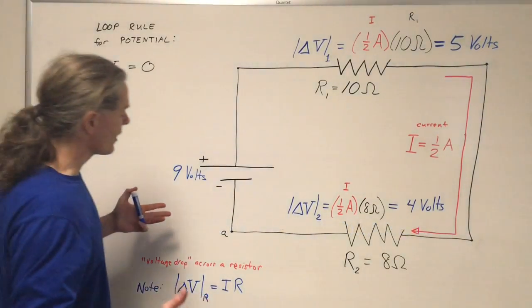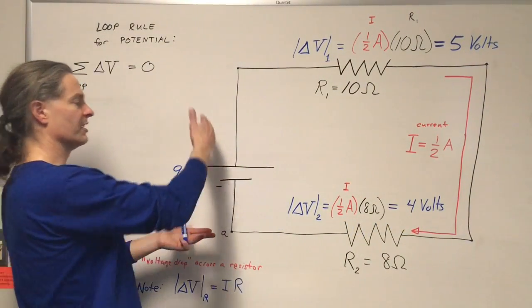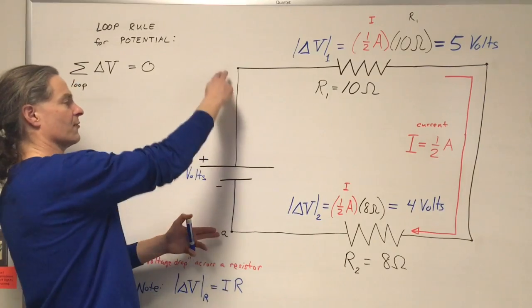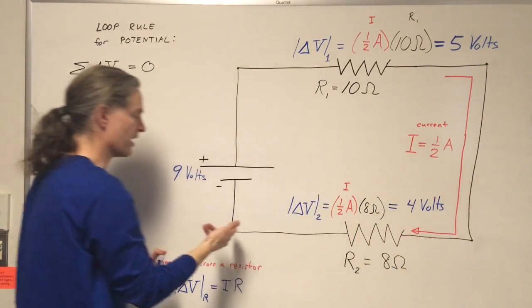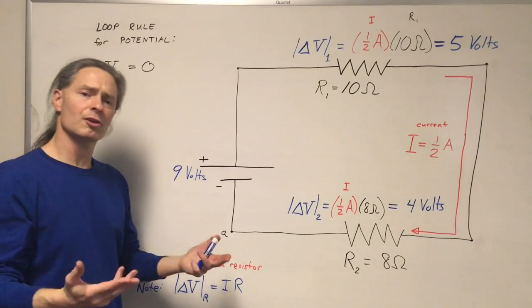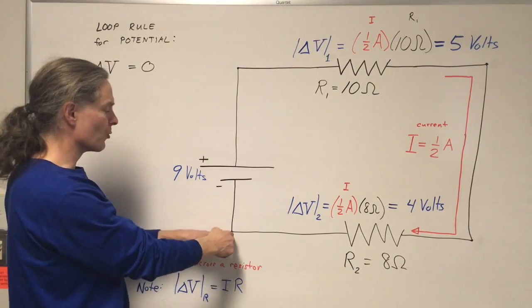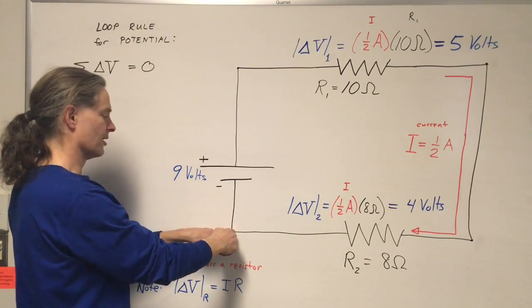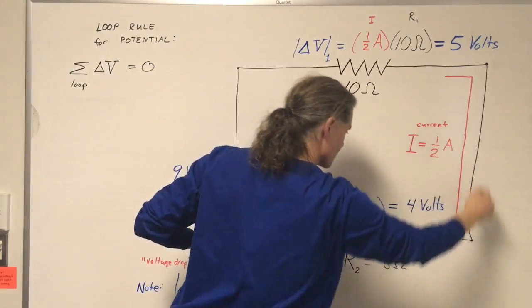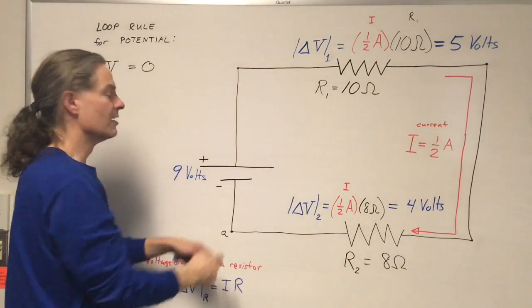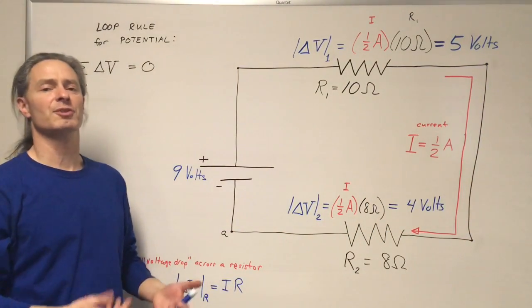Imagine we have a complete circuit. I've got a 9 volt battery, a 10 ohm resistor, and an 8 ohm resistor. The loop rule says that if you start at one point in the circuit and go all the way around the circuit and go back to the same point, the total change in electric potential will be zero.